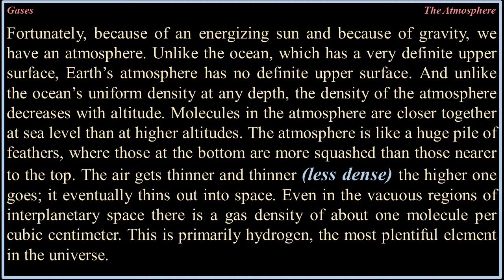Unlike the ocean, which has a very definite upper surface, Earth's atmosphere has no definite upper surface. And unlike the ocean's uniform density at any given depth, the density of the atmosphere decreases with altitude. Molecules in the atmosphere are closer together at sea level than at higher altitudes. The atmosphere is like a huge pile of feathers — those at the bottom are more squashed than those near the top. The air gets thinner and less dense the higher one goes, eventually thinning out into space.